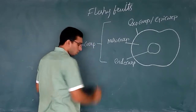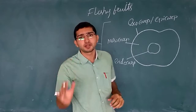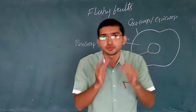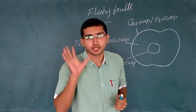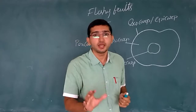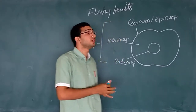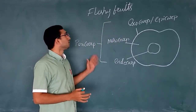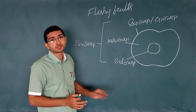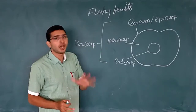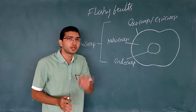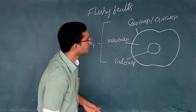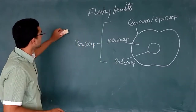On the basis of the arrangement of the pericarp, fleshy fruits have been classified into five types. Based on the nature of the pericarp, there are five classifications of fleshy fruits, and I am going to explain each and every one of them.